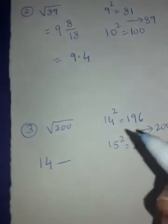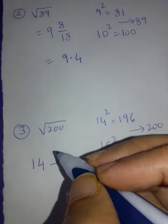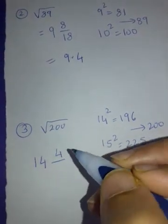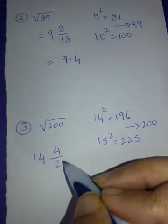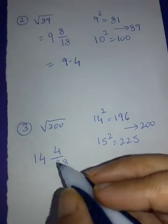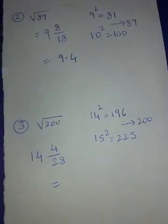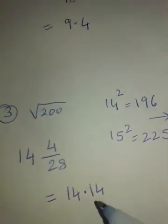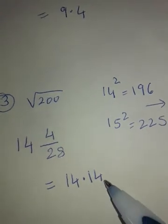Now we have to find this fraction. Between 200 and 196, difference is 4. So write 4 here. Denominator will be double of 14. That is 28. 4 upon 28 is 1 by 7. Conversion is very easy. Please tell me the answer. That's right. 1 by 7 is 0.14. So your answer is 14.14.